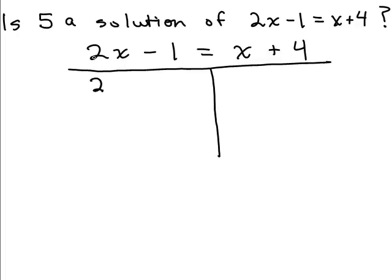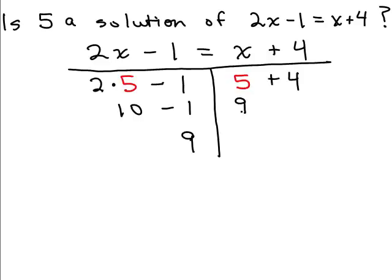Let's work through it. On the left I have 2x, which means 2 times x, so I plug in 5: 2 times 5 minus 1. Using order of operations, that's 10 minus 1 which is 9. On the right side I plug in 5 for x: 5 plus 4 is 9. I got the same number on both sides, so when I plugged in 5 the left side equaled the right-hand side. The answer is yes, 5 is a solution.